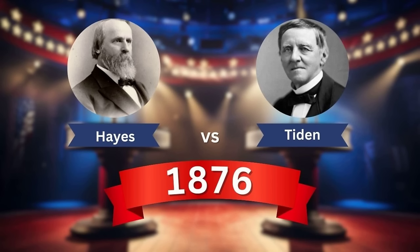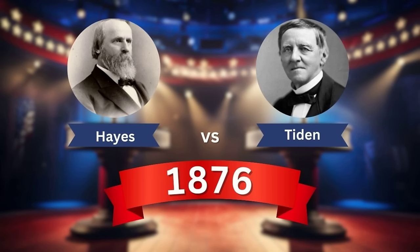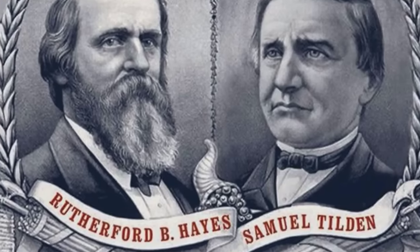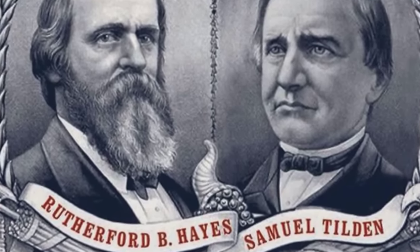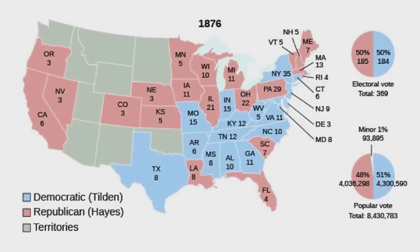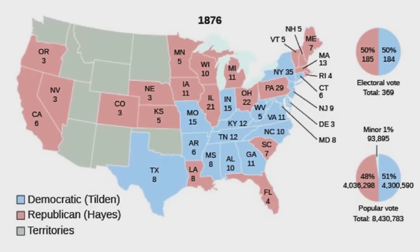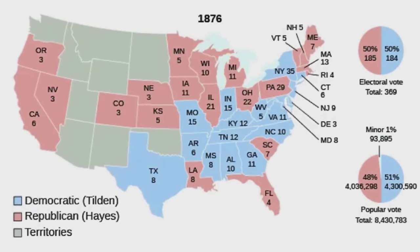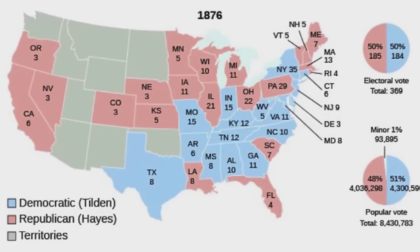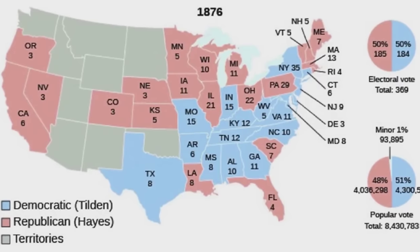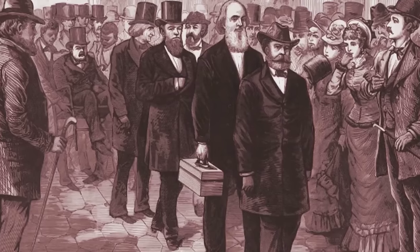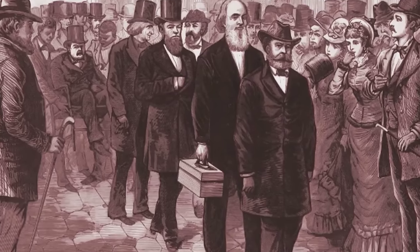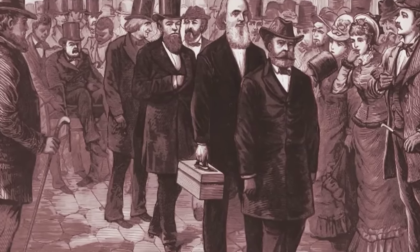1876: Rutherford B. Hayes vs. Samuel Tilden. The 1876 election was one of the most disputed in American history. Samuel Tilden won the popular vote, but Rutherford B. Hayes won the presidency after a controversial electoral commission awarded him disputed votes. This election ended Reconstruction and marked the beginning of the Jim Crow era in the South.